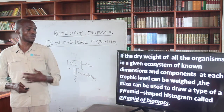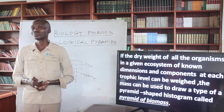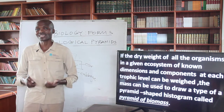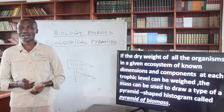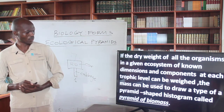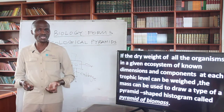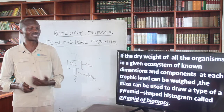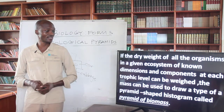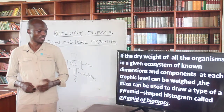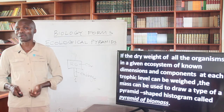We are looking at an ecosystem in which we are able to measure the dimensions and components of that particular ecosystem. If you draw the numbers that are obtained, you end up with a pyramid histogram, which we refer to as a pyramid of biomass.